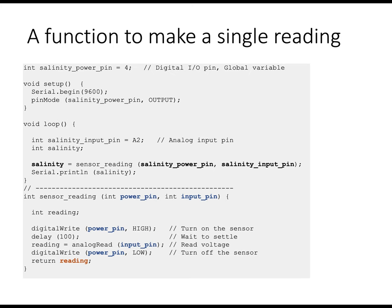Let's look at it in a bit more detail. We're using boldface to call your attention to individual variables here. When the program executes, the value stored in salinity power pin gets copied to power pin in the sensor reading function. And the value in salinity input pin is copied to the input pin inside the sensor reading function. Those variable names don't have to be the same. It's the order that they appear in the parentheses that defines what is passed when. And it's, again, values are passed, not the names, not any sort of memory space associated with those variables.